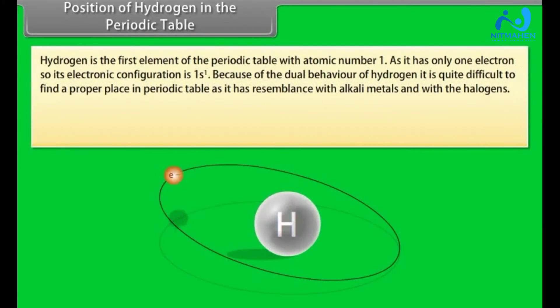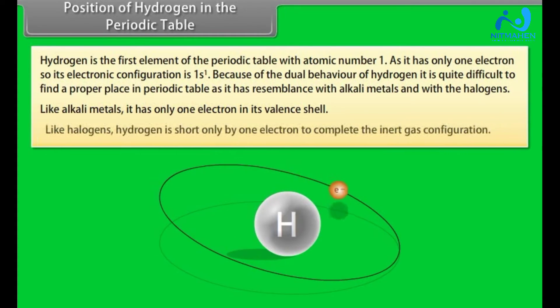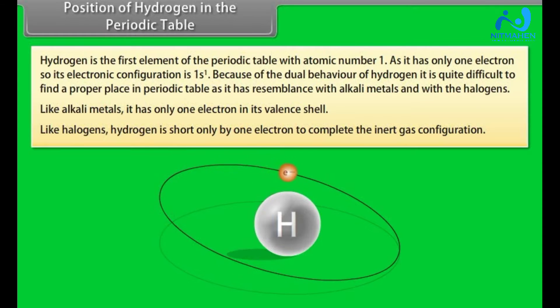Position of hydrogen in the periodic table. Hydrogen is the first element of the periodic table with atomic number one. As it has only one electron, so its electronic configuration is 1s1. Because of the dual behavior of hydrogen, it is quite difficult to find a proper place in periodic table as it has resemblance with alkali metals and with the halogens. Like alkali metals, it has only one electron in its valence shell. Like halogens, hydrogen is short only by one electron to complete the inert gas configuration.